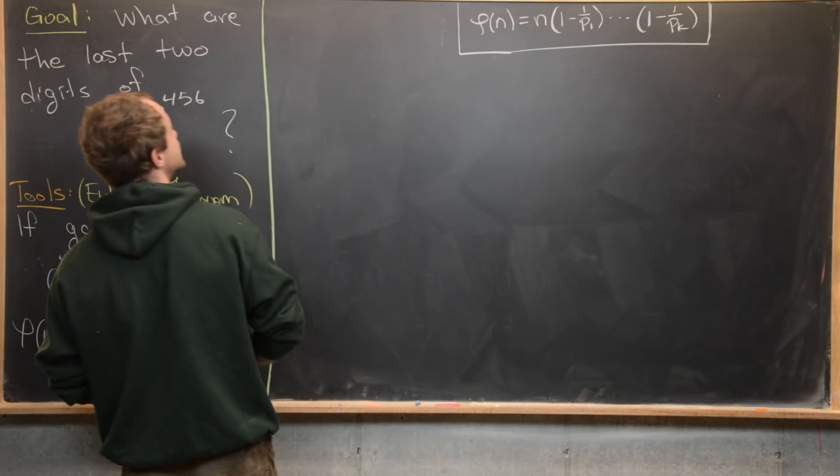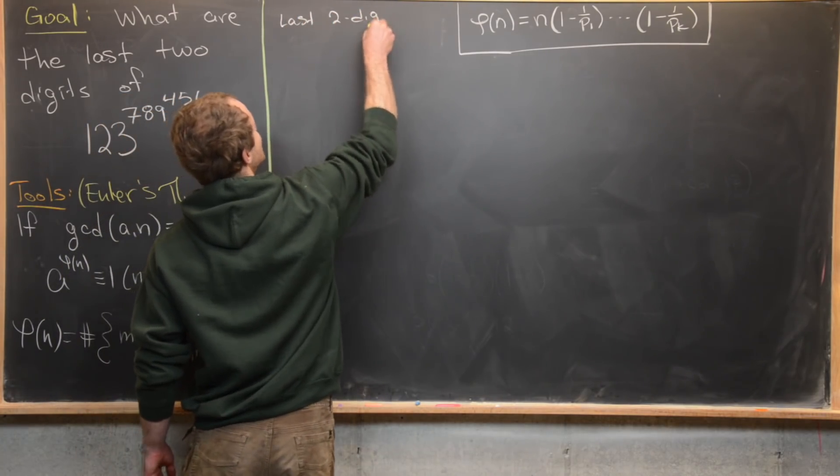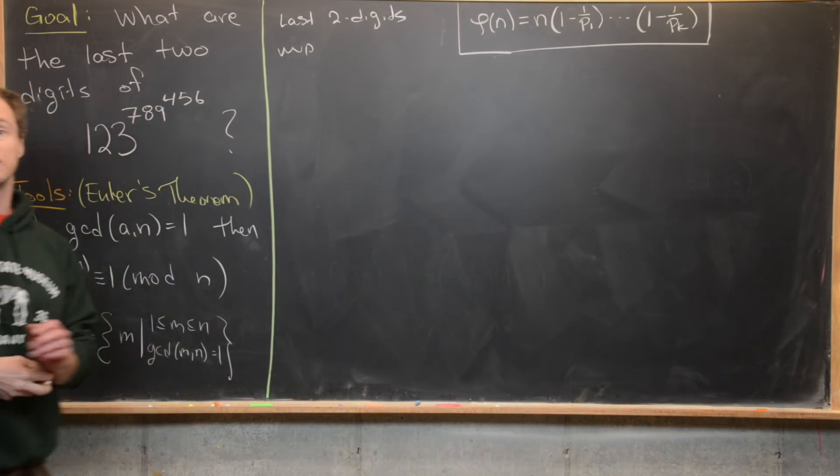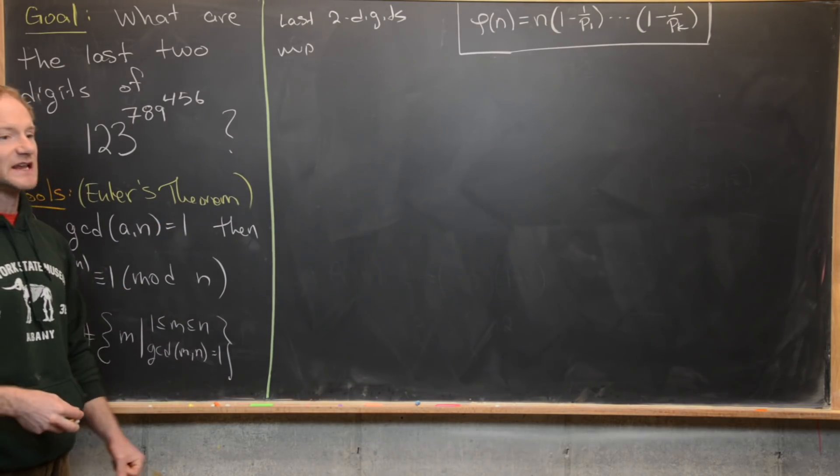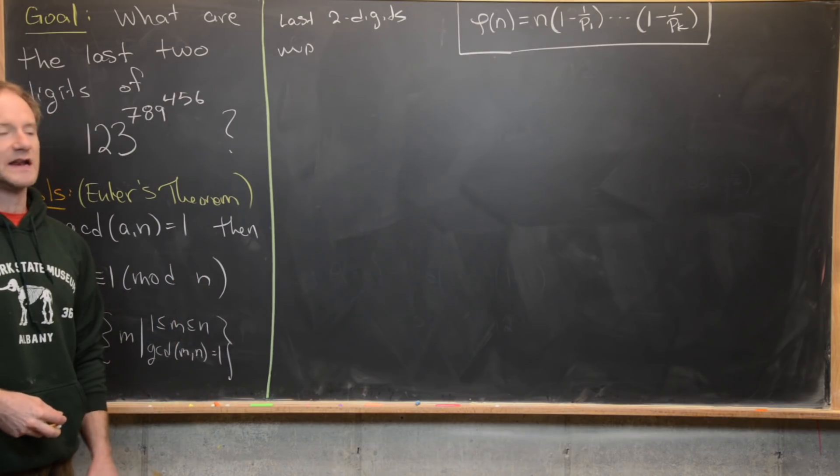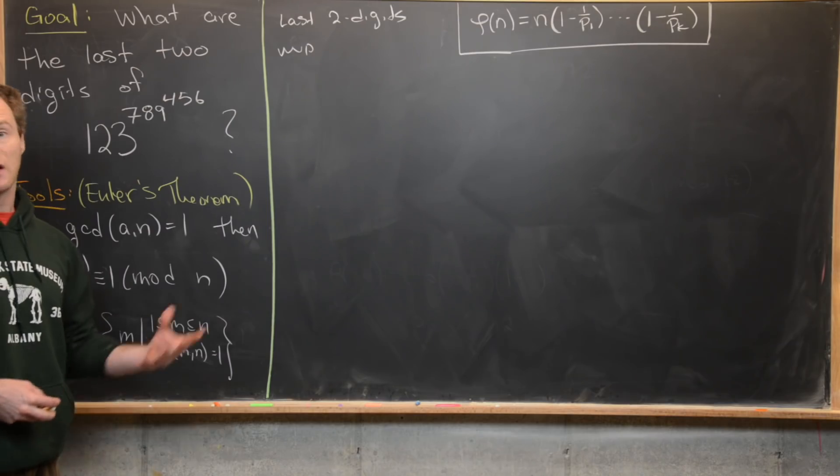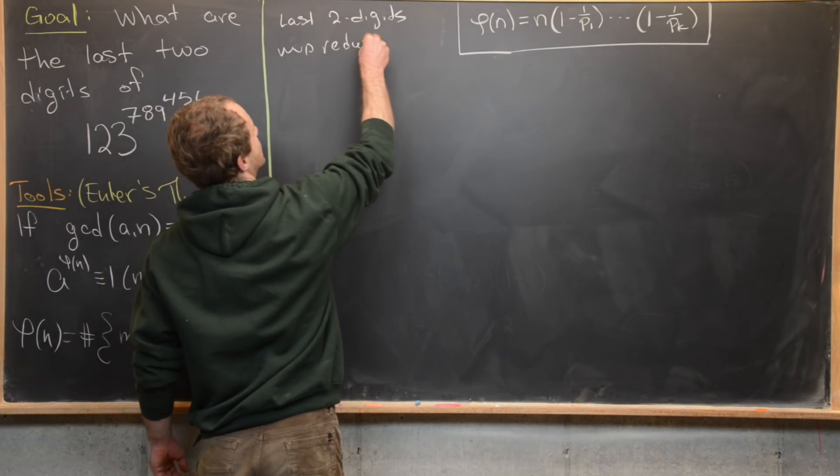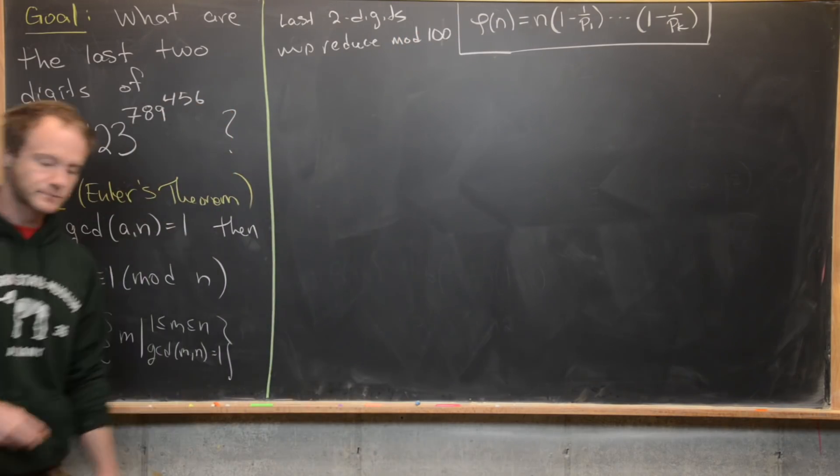The first thing that I want to notice is if we want to find the last two digits of anything, then all we care about is the reduction mod 100. Notice the last two digits of any number will be the remainder after dividing by 100. In other words, if we reduce mod 100, then all we're left with is what we want. So let's go ahead and put here. So we'll reduce mod 100.